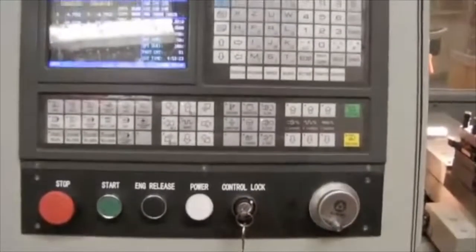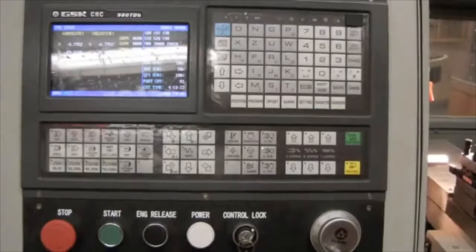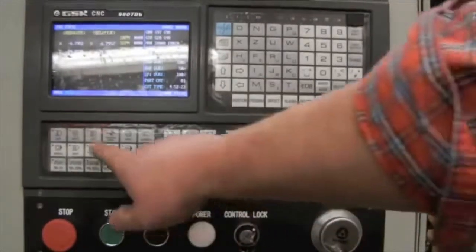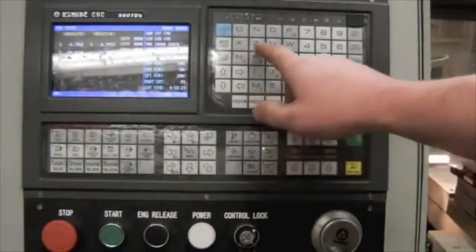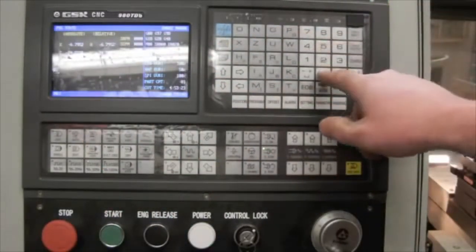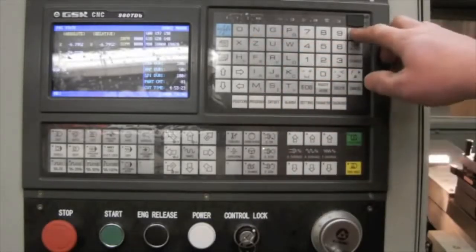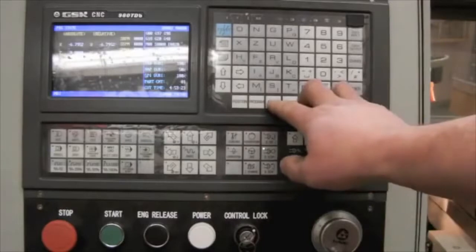From this point, I'm now going to enter my workpiece coordinates for the Z values. My workpiece coordinate for Z, I'm going to press MDI in the program state window. I'm going to enter G50 Z0. Data input, cycle start.